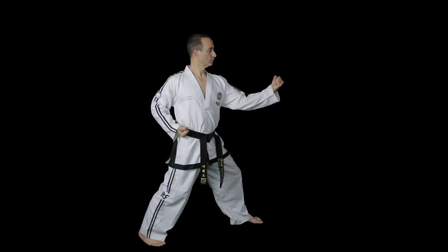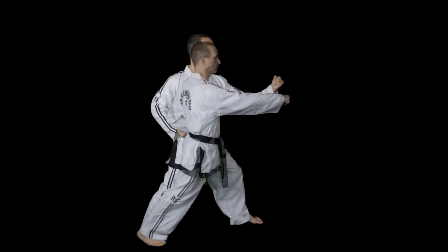An interesting thing to note is that in some stances your body height might be different depending on whether you're half facing or full facing. For example, in walking stance your body height will be very slightly higher if you're half facing compared to when you're full facing.